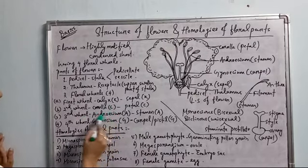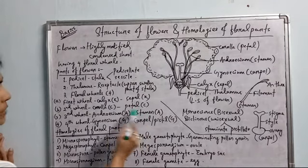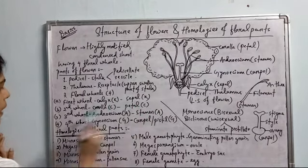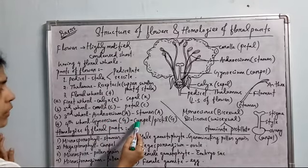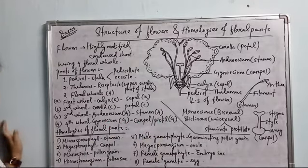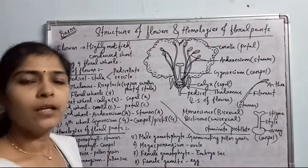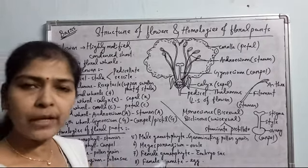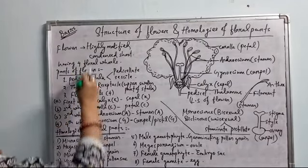The third whorl is androecium — androecium is the male reproductive organ of the flower. The individual units are stamens, and both are indicated by the letter A. The fourth whorl is gynoecium, indicated by the letter G. The individual unit is carpel or pistil. These four floral whorls are nothing but modified leaves.